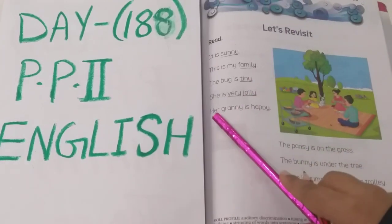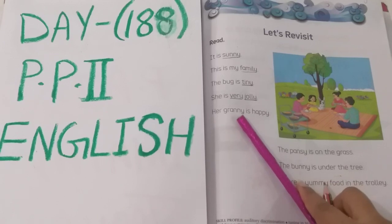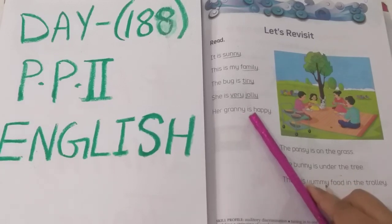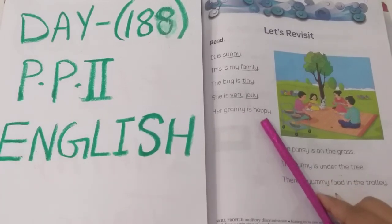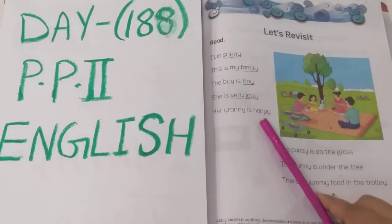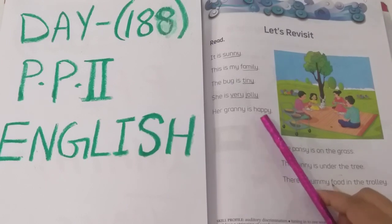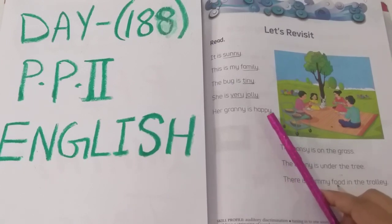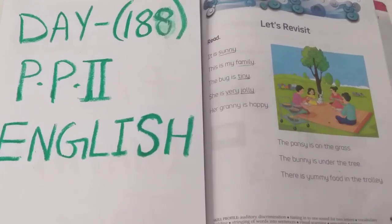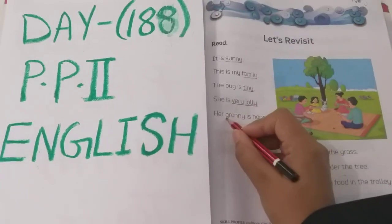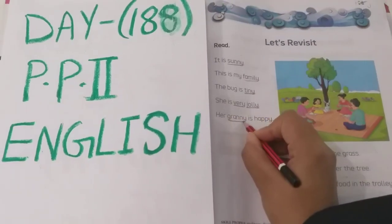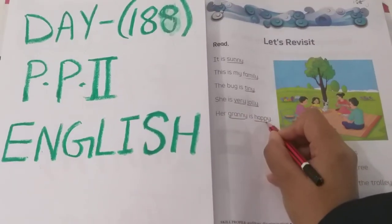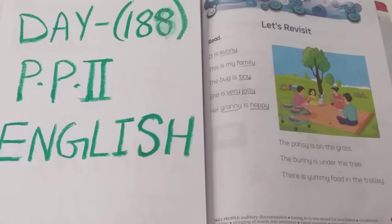H-E-R, her. G-R-A-N-N-Y, granny. I-S, is. H-A-P-P-Y, happy. Her granny is happy. So where is the letter Y in the words, children? Here you can see in granny as well as in happy. For letter Y, we are pronouncing as E sound.